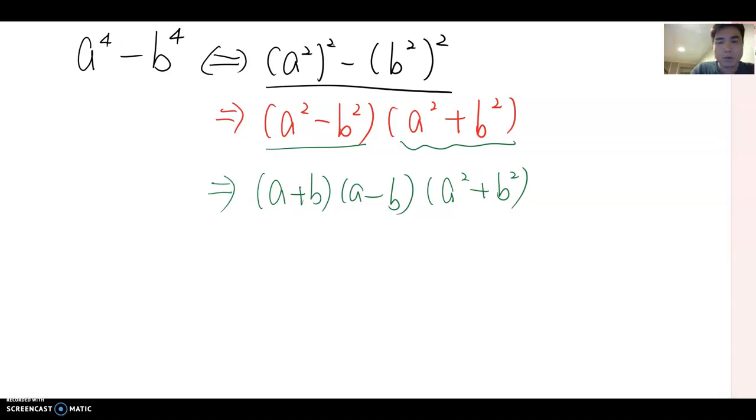Then look at this question: 81x to the fourth power minus 16y to the fourth power. So first of all, I'm gonna switch it as a square power form. Then this becomes we can write 9x squared to the square minus 4y squared to the square.